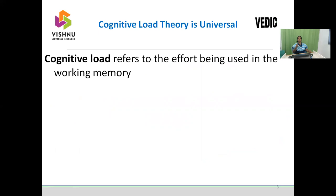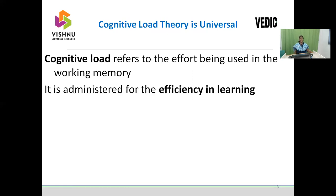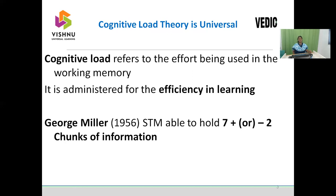What is the energy consumed by the working memory while learning, especially for novice users? It is administered for the efficiency in learning. George Miller in 1956 introduced cognitive load theory, announcing that short-term memory is able to hold 7 plus or minus 2 chunks of information — maximum 9, minimum 5. Retention rate improves when strong cues and stimulus are given, both internally by the learner and externally by the teacher.